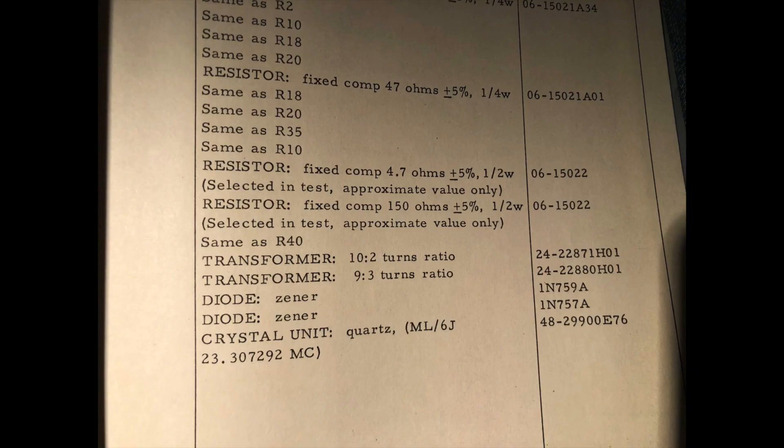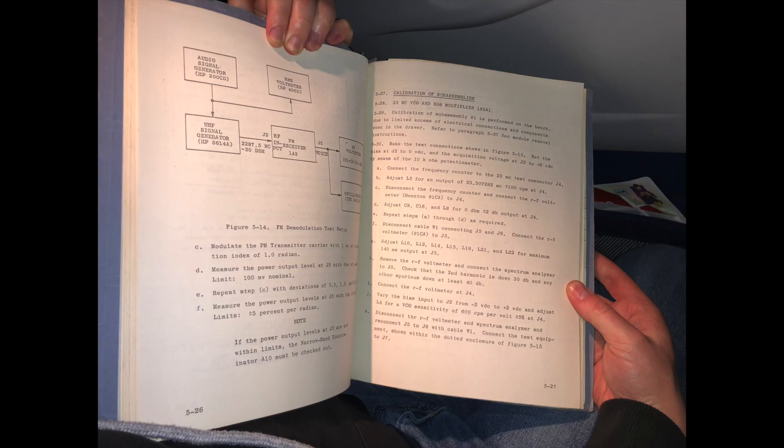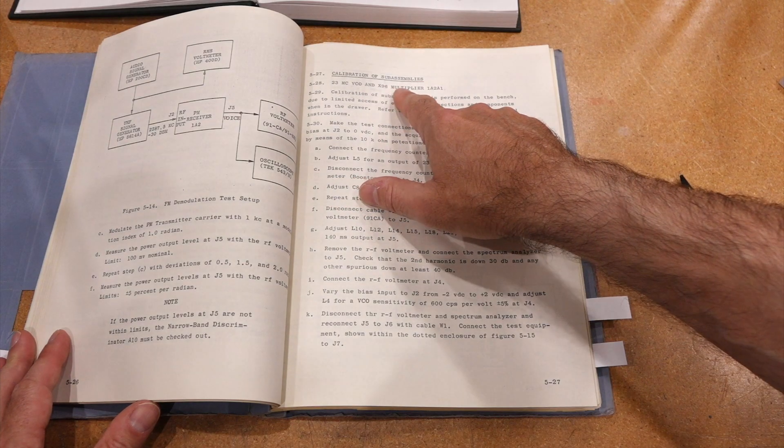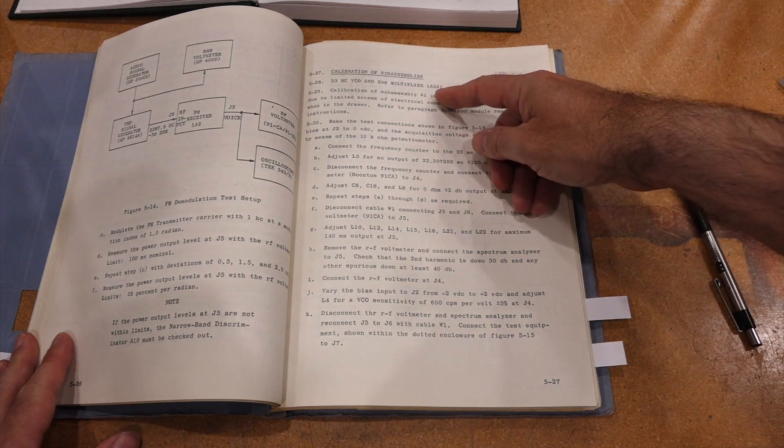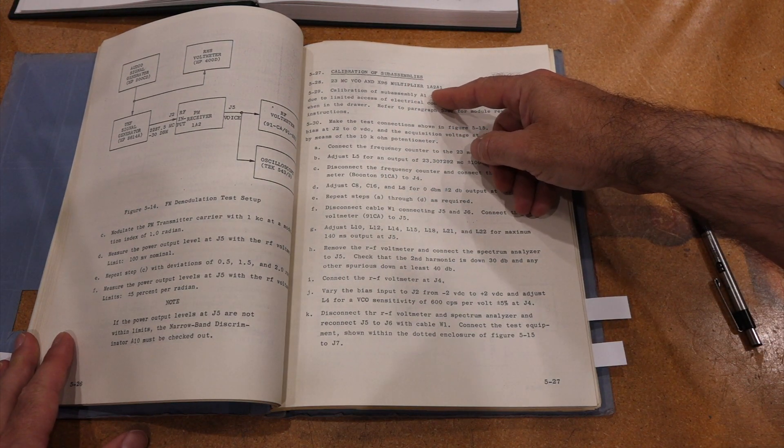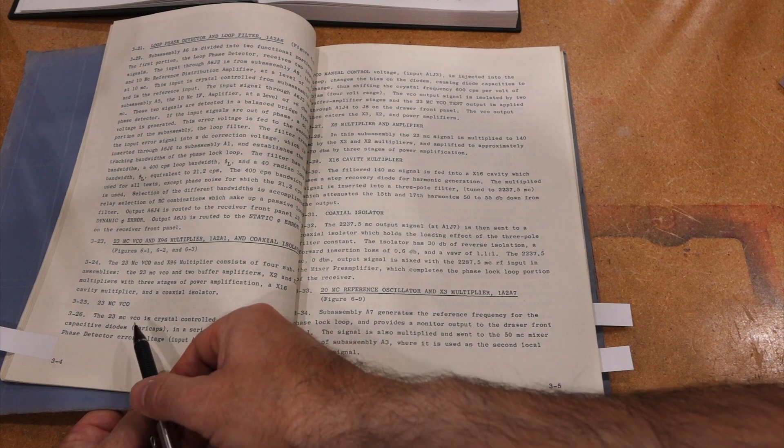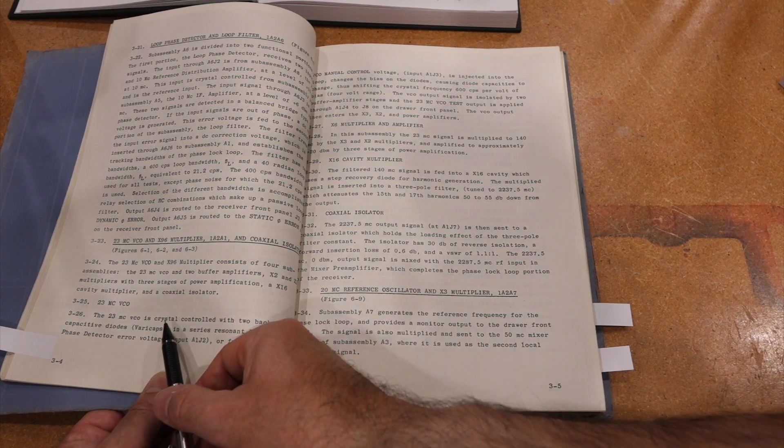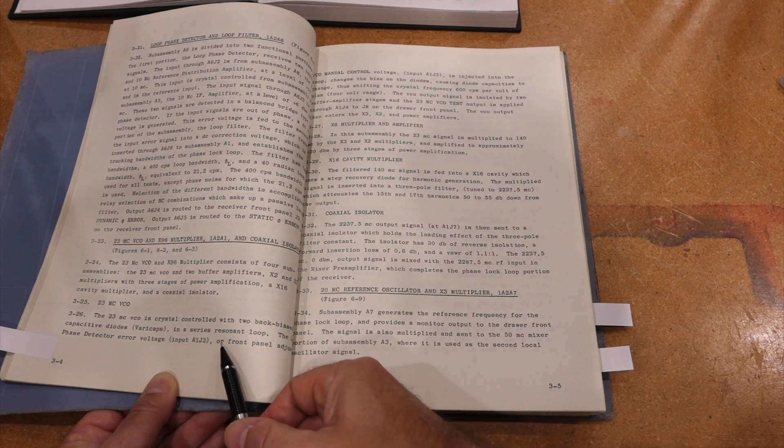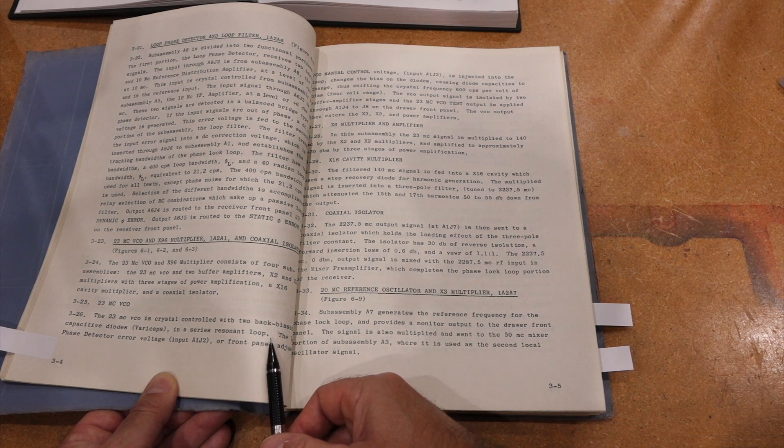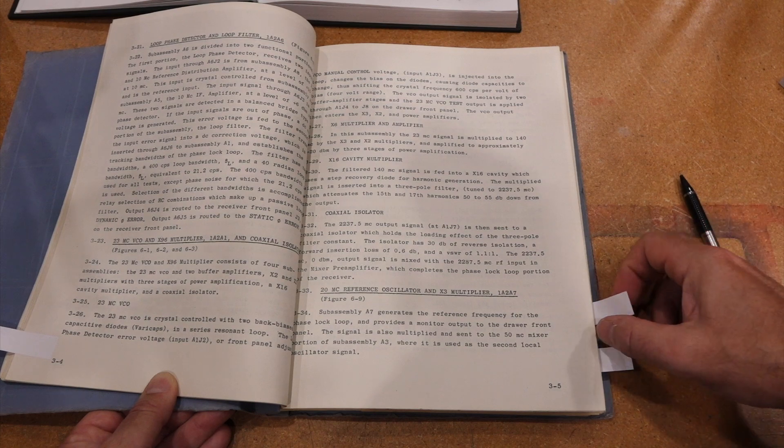And of course, we went straight to the parts section, and there at the bottom was our crystal. Good news, we had calculated our crystal frequency correctly. And then of course, we frantically searched if there was a section on the tuning of the VCO. And guess what? There is! The whole procedure in glorious details. No need to reverse engineer the VCO anymore. And it also says that the crystal control VCO is in a series resonant loop. So it's probably a series resonant crystal.